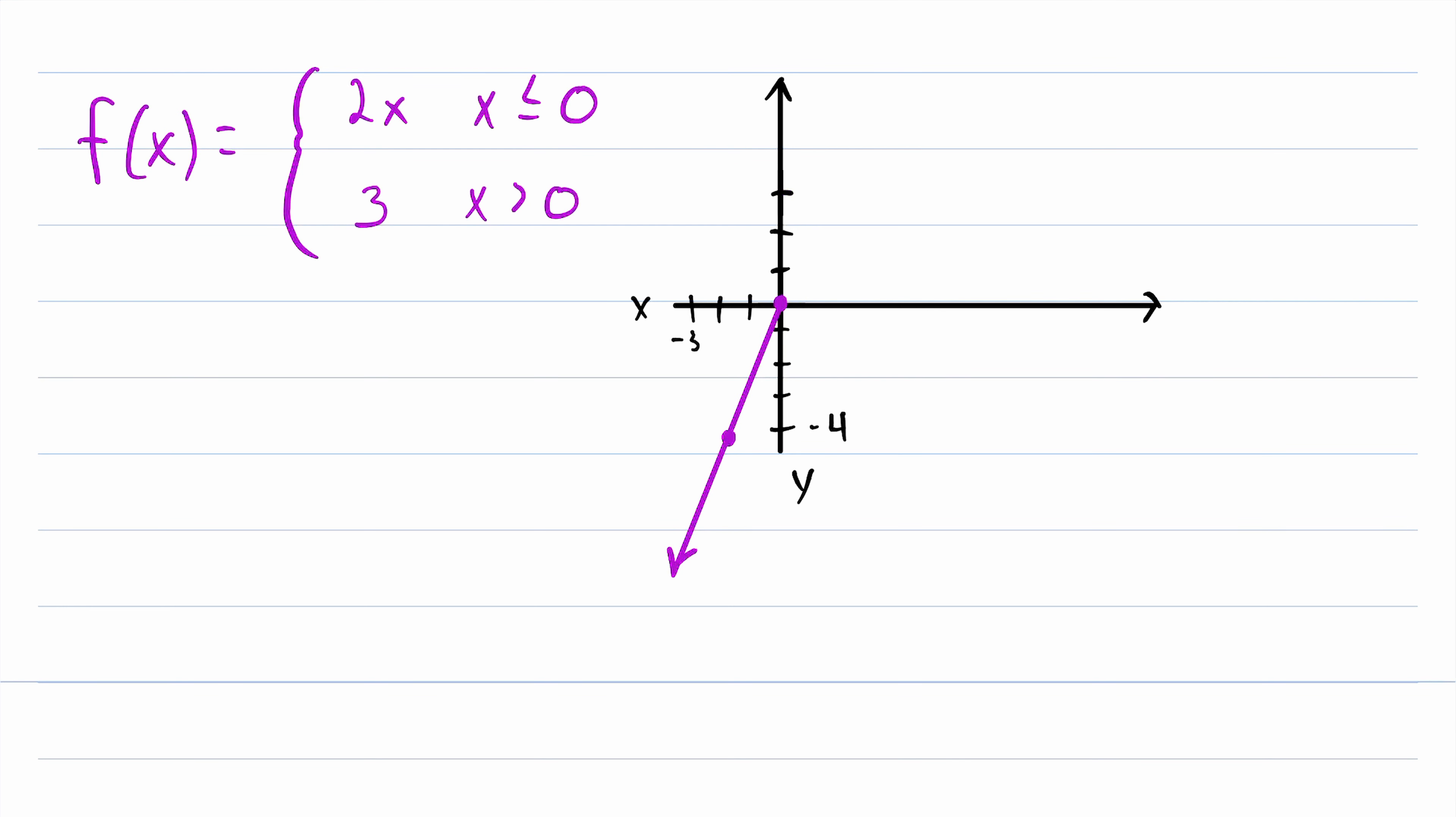So how can we indicate in our graph that this line does not include x equals 0? Well, the standard way to do that is to just put an empty circle at x equals 0. Let me draw that again so it's more clear that it's an empty circle. One more time. Yeah, that's all right.